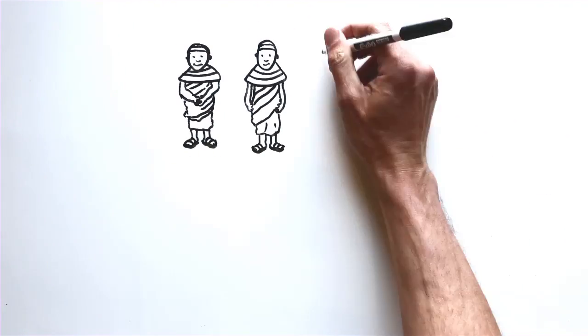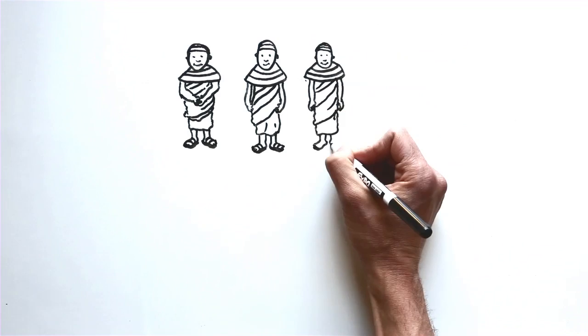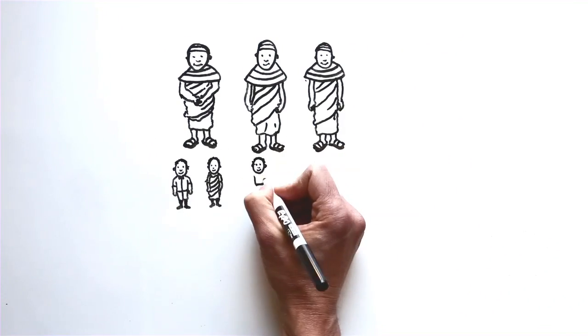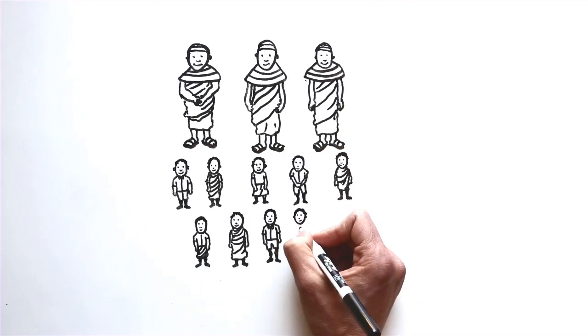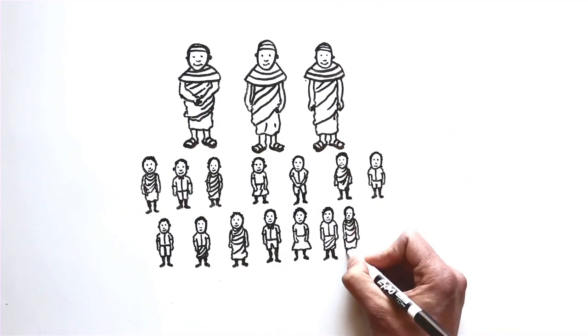Each BOMA business includes three women. Each woman supports an average of five children. That's 18 people lifted out of poverty for every business we launch.